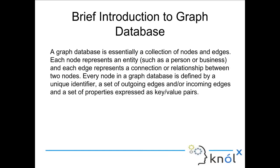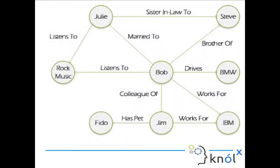This is a basic example of a graph database from the internet. If we pick the first two nodes, Julie and Steve — Julie is a node pointing towards Steve and the relationship between them is 'sister-in-law to'. This relation tells us that Julie is sister-in-law to a person called Steve. Similarly, there are many such relationships with different names, and multiple nodes connected to other nodes through those relationships. This is a basic visualization of a graph database.